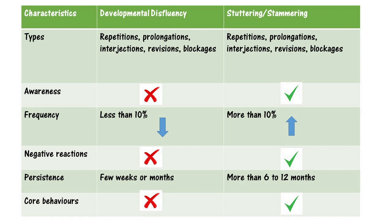Children may even ask their parents why they have trouble talking. Disfluencies in developmental disfluency can persist for a few weeks or even months, sometimes going away for a time and then returning. Whereas in children with stuttering, the disfluencies may last longer than 6 to 12 months — and that is when you need to be concerned and talk to your speech therapist.